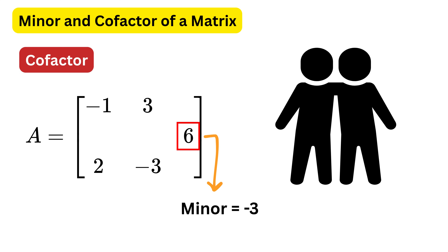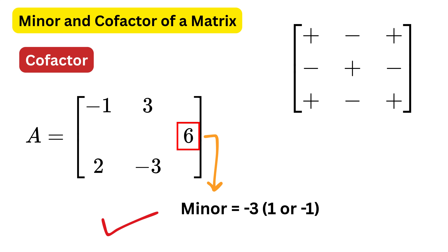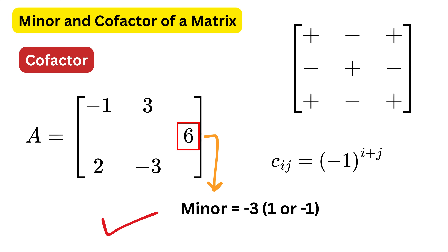Now, coming to the cofactor. The cofactor is almost the same as the minor, but with a minor adjustment. Once you have found the minor, you simply multiply it with either plus 1 or minus 1 based on the position of the element. The sign is decided by the rule of plus and minus in a checkerboard pattern, starting with plus in the top left corner and going in an alternate pattern. Symbolically, the cofactor of an element A sub ij is equal to minus 1 raised to the power i plus j, multiplied by the minor of that element.